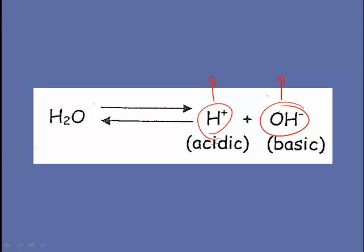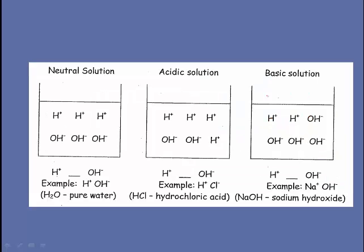When water dissociates, you get an equal number of hydrogen ions to hydroxide ions. As a result, you have a perfectly neutral solution if you have pure water. Let's take a look at this. In a neutral solution, the hydrogen ions balance out the hydroxide ions. Here we're showing 3 hydrogen ions to 3 hydroxide ions. In a neutral solution, hydrogen ions are equal to hydroxide ions. The only case of this would be pure water.